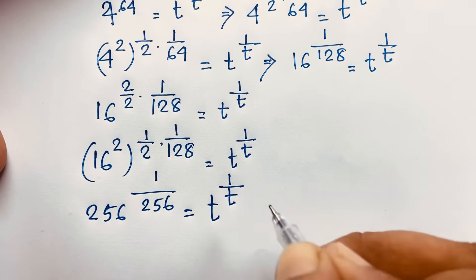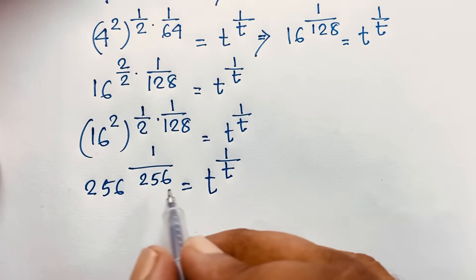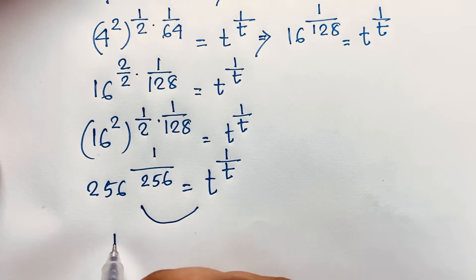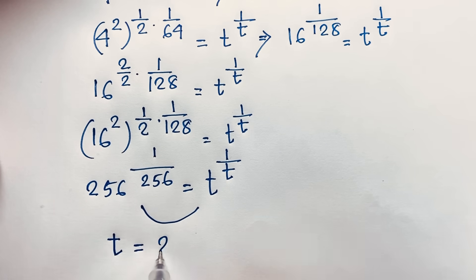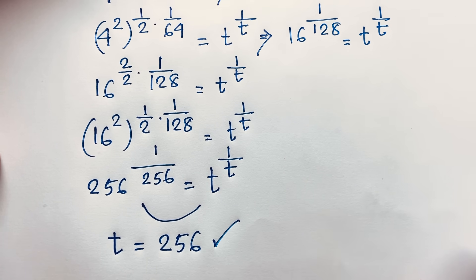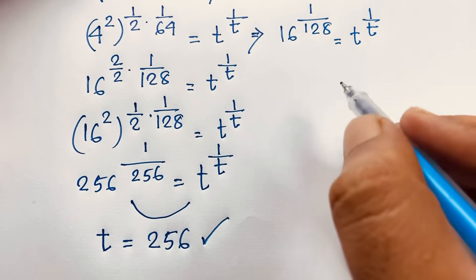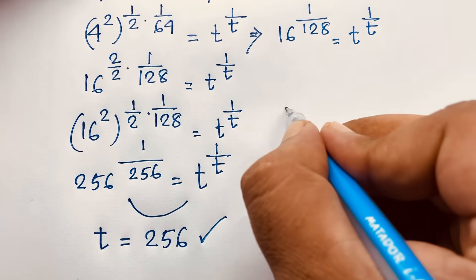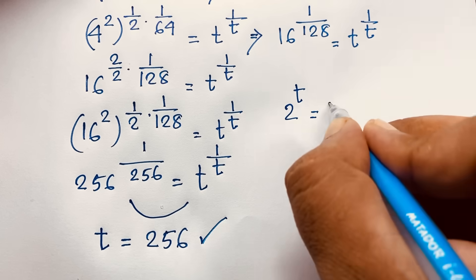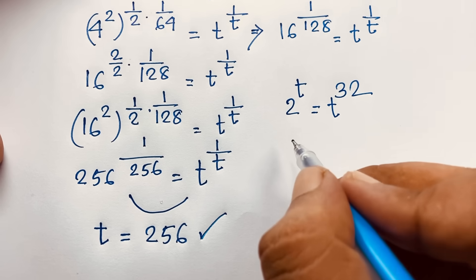Now comparing both sides of the expression, you can see easily that t is equal to 256. This is our final solution to this exponential math olympiad problem. Let's verify: 2 to the power t equals t to the power 32 — substituting t = 256.